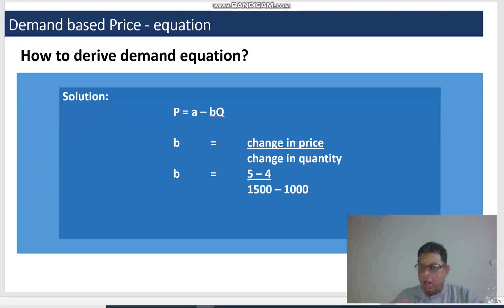Now there are two price combinations, 5 and 4, so change in price will be 5 minus 4, and the change in quantity will be 1500 minus 1000. And if we calculate using the calculator, 5 minus 4 is 1, divided by 1500 minus 1000 is 500. So 1 over 500, our calculator gives us 0.002.